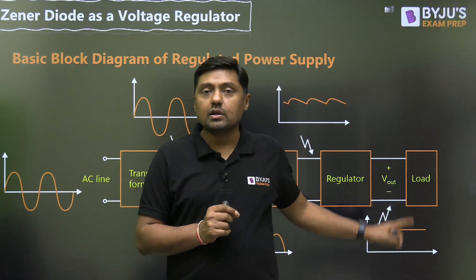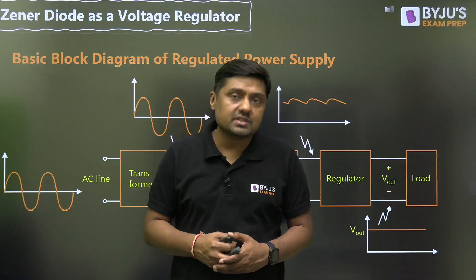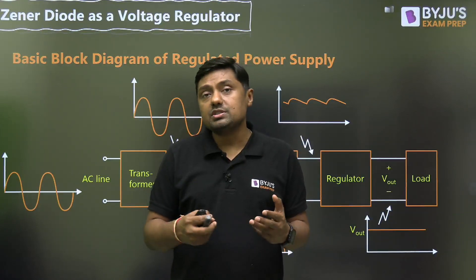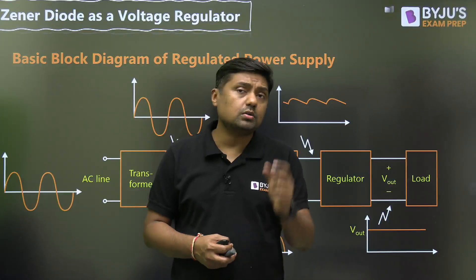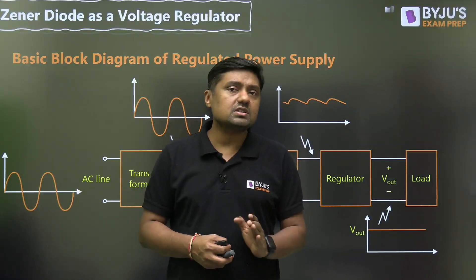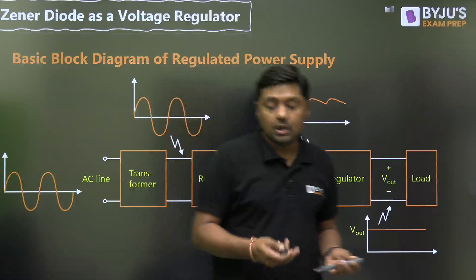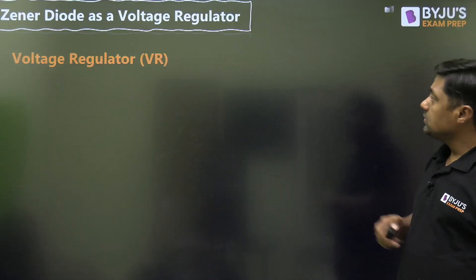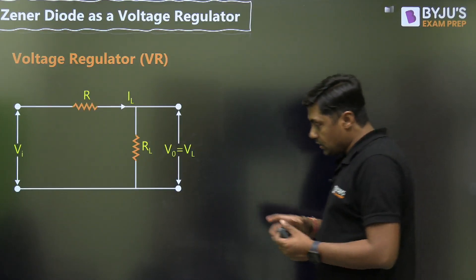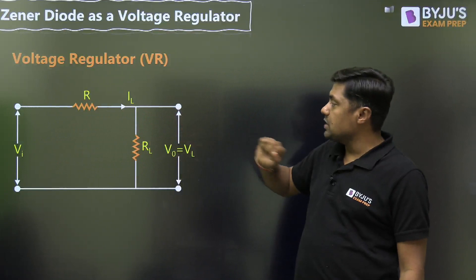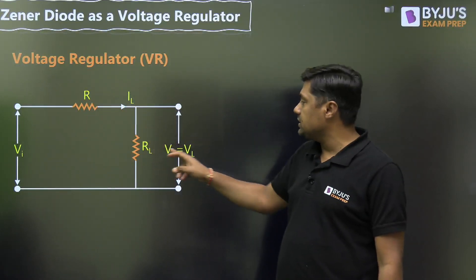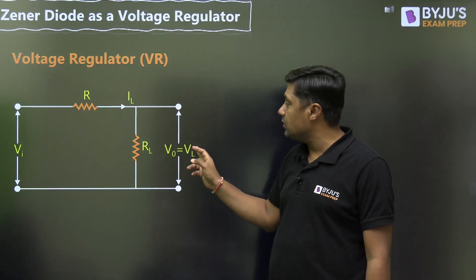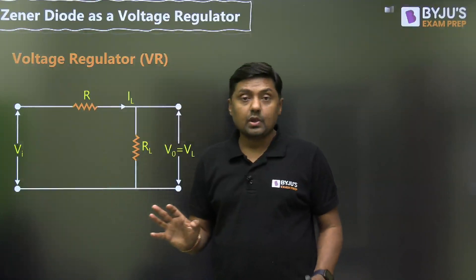We can design the voltage regulator using a Zener diode, BJT (shunt or series voltage regulator), or an operational amplifier. Here we will discuss the voltage regulator using Zener diode, and I will give you two important formulas to make it easy to solve questions. In an unregulated circuit we have R and R_L, with output V0 across R_L. V0 equals V_L, and using the voltage division rule: V0 = (R_L / (R + R_L)) × Vi.